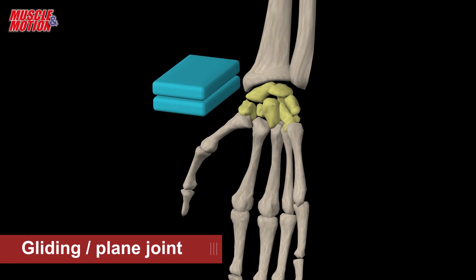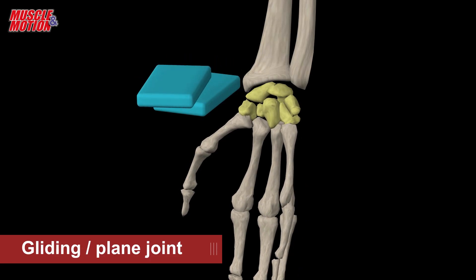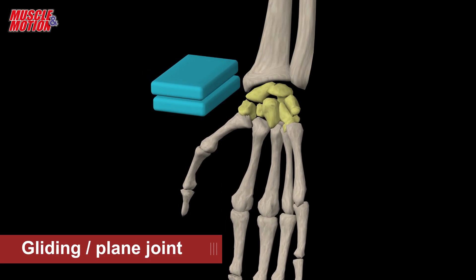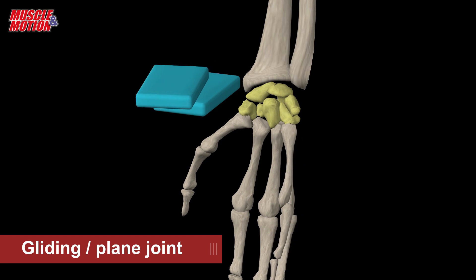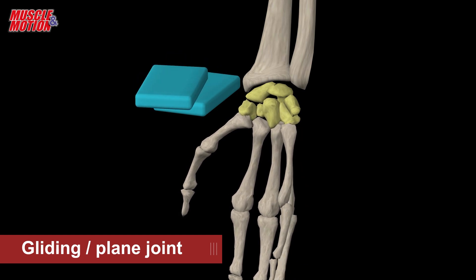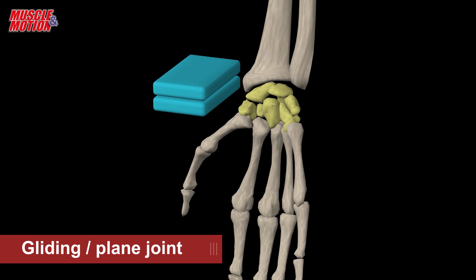Gliding plane. The articular surfaces are relatively flat, allowing the bones to glide over one another. For example, the acromioclavicular joint and subtalar joint.